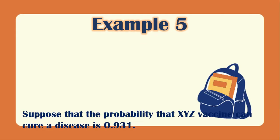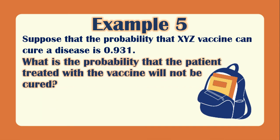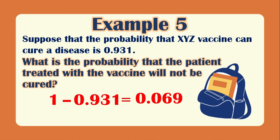Example 5: The probability that XYZ vaccine can cure a disease is 0.931. What is the probability that the patient will not be cured? We subtract from 1: 1 − 0.931 = 0.069. So there is a 0.069 chance of not being cured using the vaccine. That's how we solve probability of simple events.